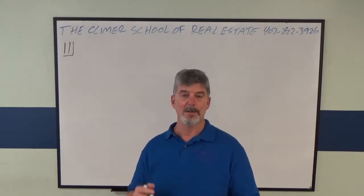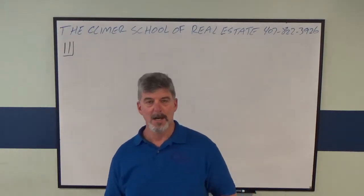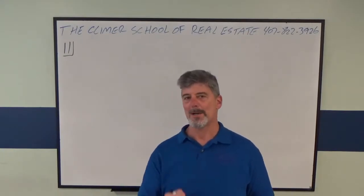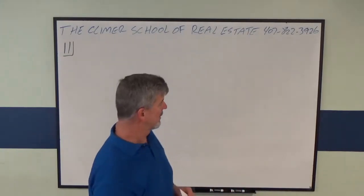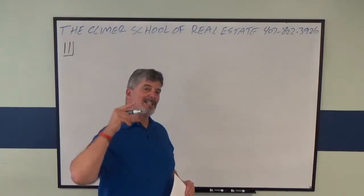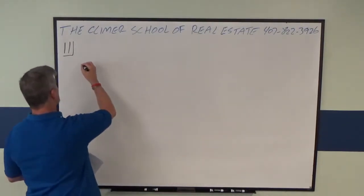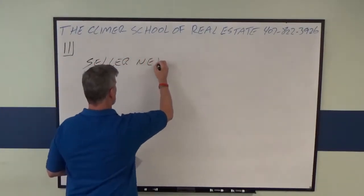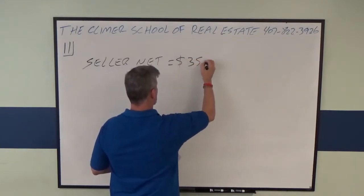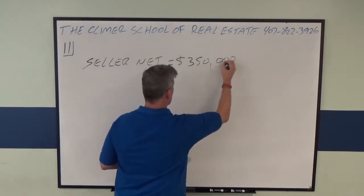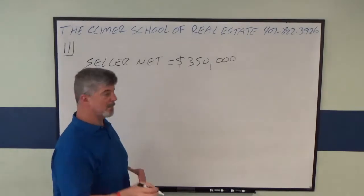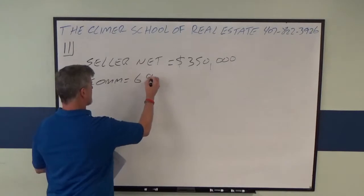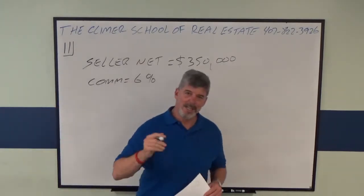To satisfy the owner and earn exactly six percent commission. This is a net listing problem — what I call a 'going backwards' problem. Let me put the information up first. The seller wants to net $350,000, the broker's commission is six percent, and the question is: what's the sales price to make both of these things happen?